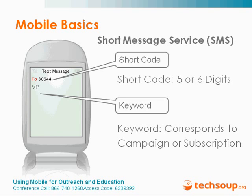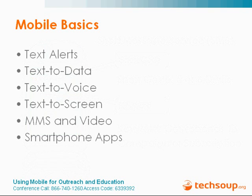There are a number of different campaigns that can happen over text messaging and mobile. The first is text alerts — sending up-to-the-minute information, reminders, things like that. Text to data is more of a pull system where you can text in a query and get an answer back. If anybody's familiar with Google SMS, this is a really big text-to-data system. Next is text to voice — because you're using a phone, you can incorporate voice into these programs, push out a phone number to people, and get them to take action.